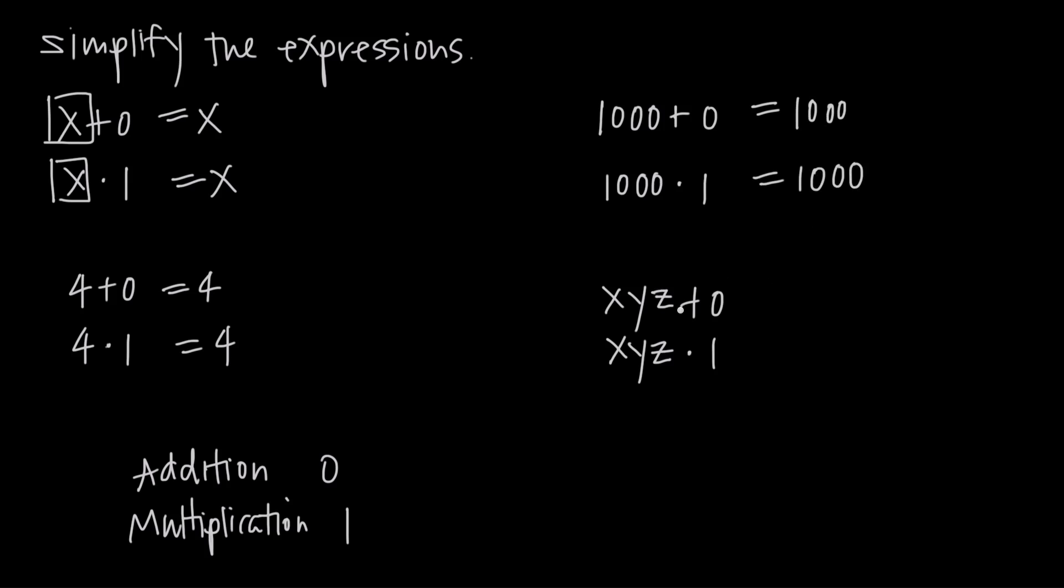We can also do it with variables. So it doesn't matter what we apply these identity numbers to, we're still going to keep the identity of the original value. So x, y, z plus 0 is still x, y, z. And x, y, z times 1 is still x, y, z.